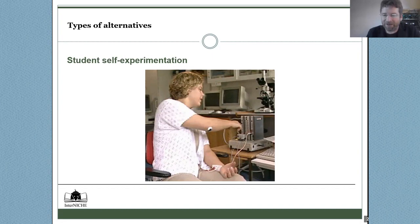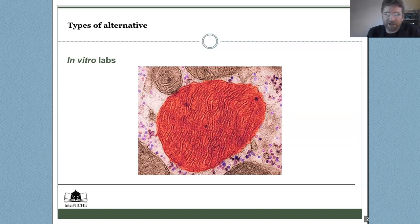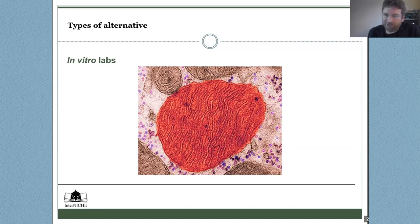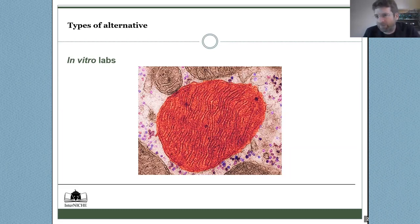In vitro labs — a typical biochemistry experiment can be done using mitochondria sourced from vegetables such as turnips instead of from rat liver, for cell respiration experiments. You can also work with plant material as a direct replacement. Getting used to in vitro labs is also very important for preparing students who might want to go on into humane research and testing, because a lot of that work will be in vitro too.